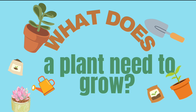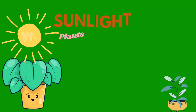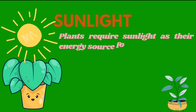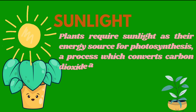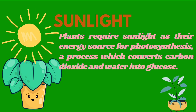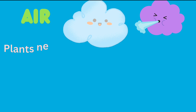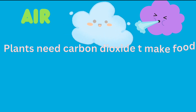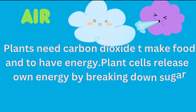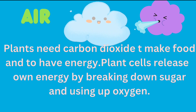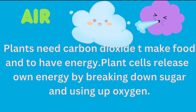What does a plant need to grow? Plants require sunlight as their energy source for photosynthesis, a process which converts carbon dioxide and water into glucose. Plants need carbon dioxide to make food and to have energy. Plant cells release their own energy by breaking down sugar and using up oxygen. The two primary reasons plants need air are for photosynthesis and to breathe.